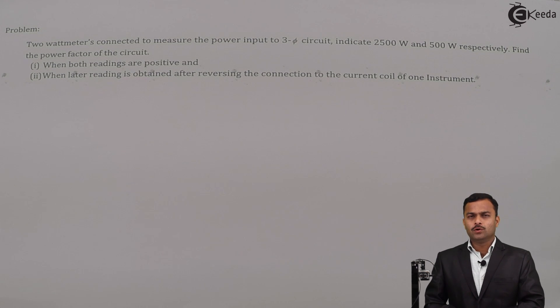Hi friends, in this video we are going to solve a simple problem based on three-phase power measurement. The problem is: two wattmeters connected to measure the power input to a three-phase circuit indicate 2500 watts and 500 watts respectively. Find the power factor of the circuit when both readings are positive, and second condition when the latter reading is obtained after reversing the connection to the current coil of the instrument. It's a simple formula-based problem, but just understand the procedure.